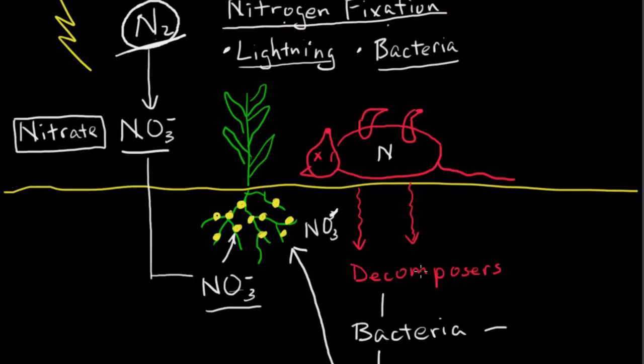So again to review, organisms die, they decompose, and it has all these nitrogen compounds in it. Bacteria breaks it down even further into this N2, and the N2 can be changed into nitrates by the use of these bacteria that are on the plants.